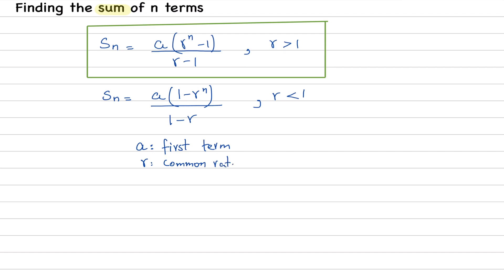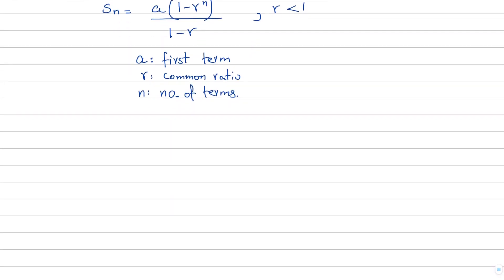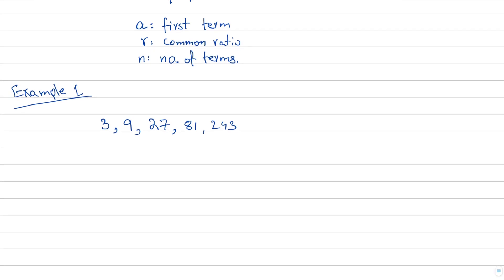Let's understand with an example. We make a geometric progression and test the formula. Let's say the terms are 3, 9, 27, 81, 243. If I need the sum of the first 4 terms — that is 3 plus 9 plus 27 plus 81 — I get a sum of 120. So the sum of the first 4 terms equals 120, without using the formula.